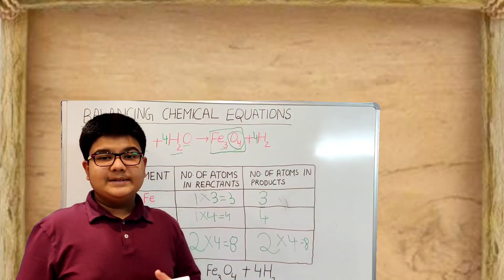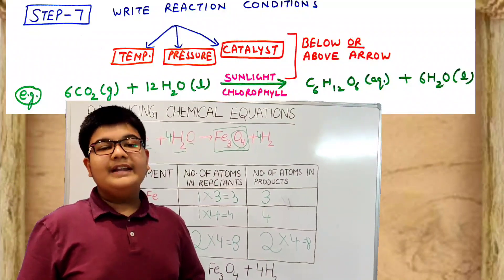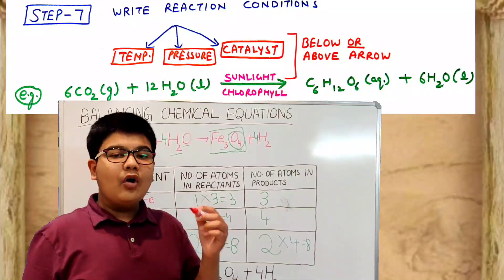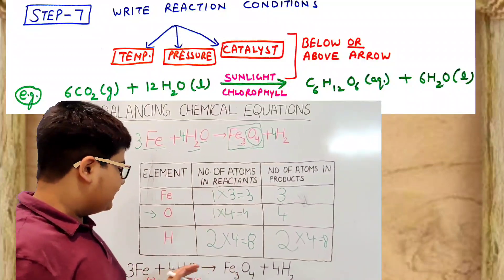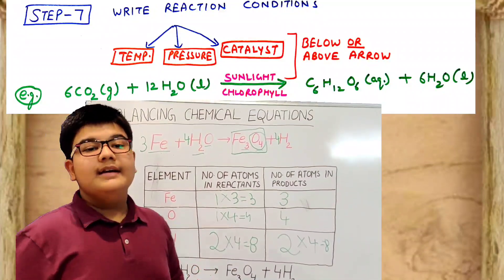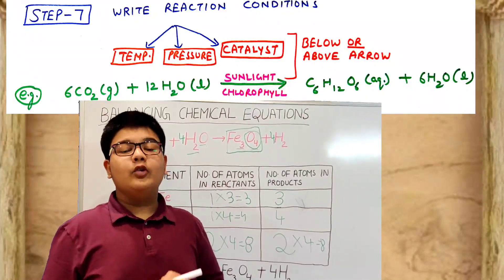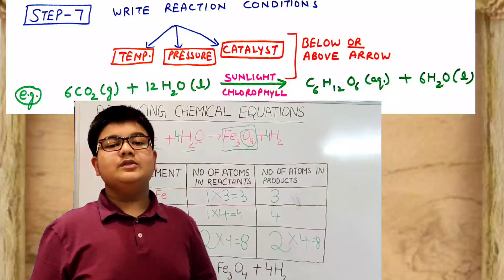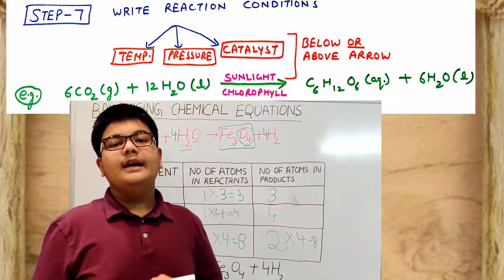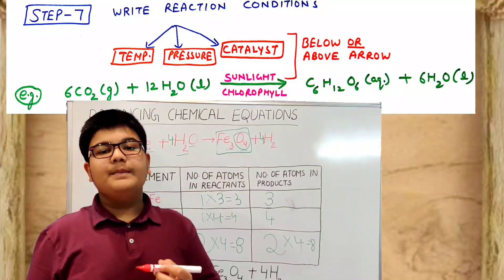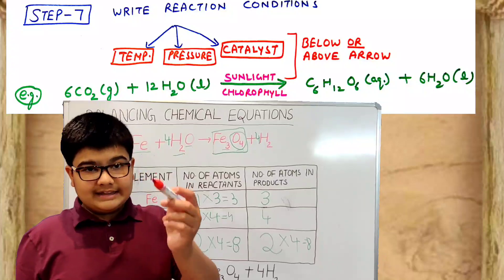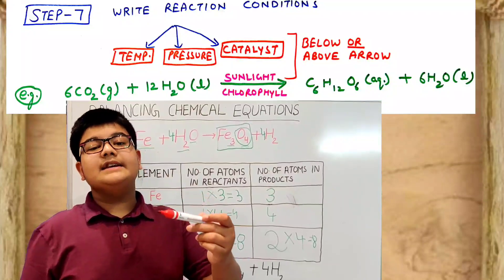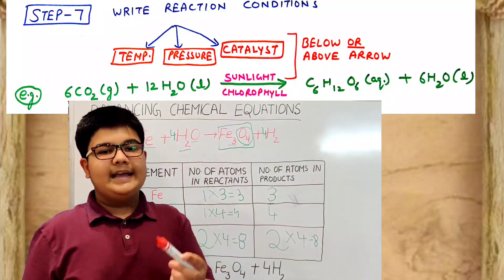Step 7: write the reaction conditions such as temperature, pressure, or catalysts above or below the arrowhead. For example, in the photosynthesis reaction — 6CO2 + 12H2O → glucose + 6O2 + 6H2O — sunlight and chlorophyll are placed above and below the arrowhead, as shown in the picture.